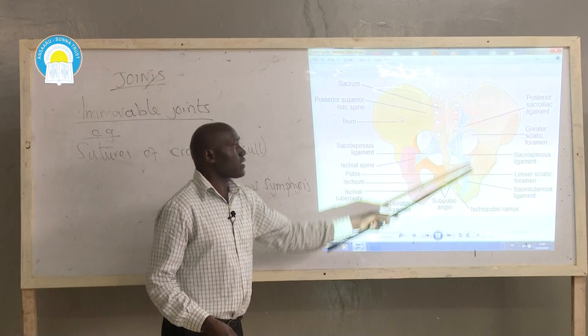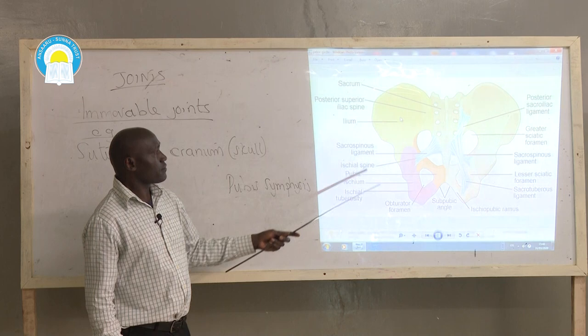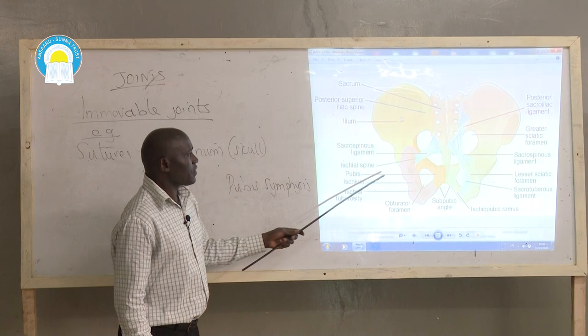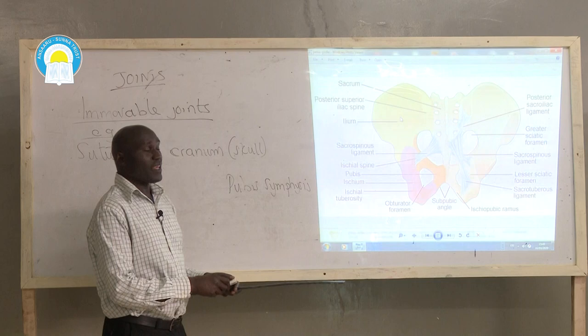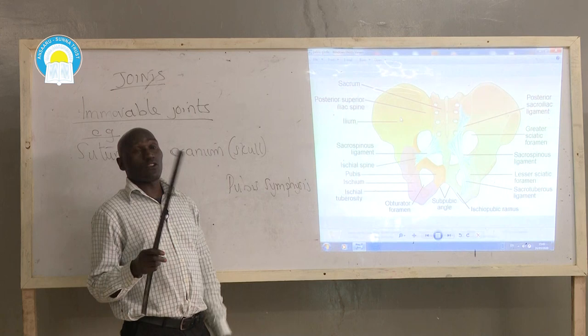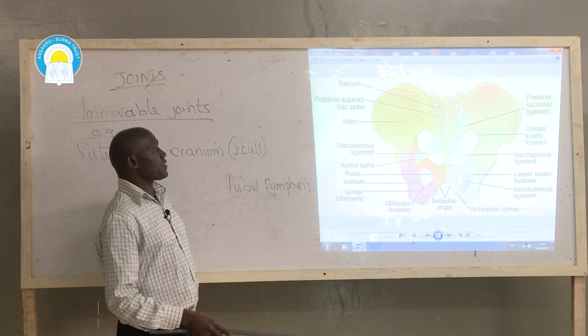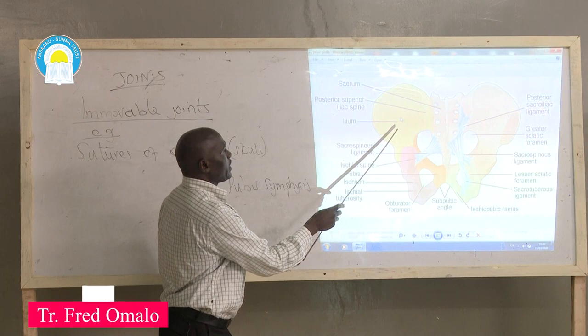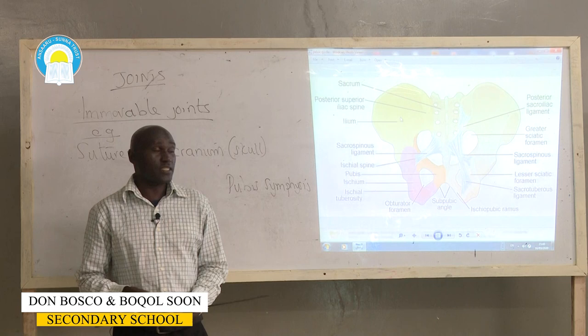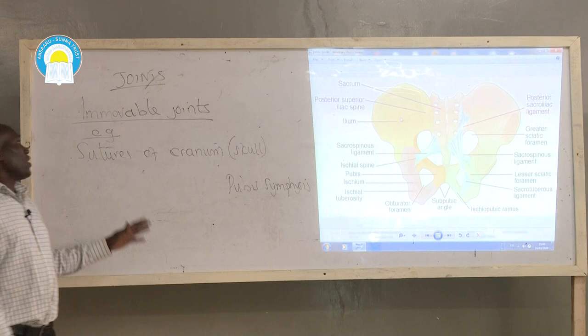Each half of the pelvic girdle is made up of three different types of bones: ilium marked in yellow, pubis marked in brown, and ischium marked in purple. These three bones are also connected at specific points where there is no movement. For example, between ischium and pubis there is a joint, and between ischium and ilium there is also a joint — at those joints, no movement is experienced.